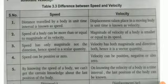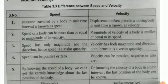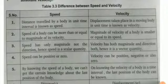In speed, fourth point: speed can be positive or zero. But in velocity, velocity can be positive, negative, or also zero. Fifth point of speed: by knowing the speed of a body, we can't get certain knowledge about the last position of the body. In velocity, on knowing the velocity of a body in a time interval, the last position of the body can be known.